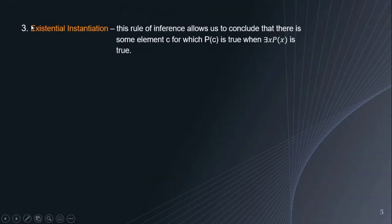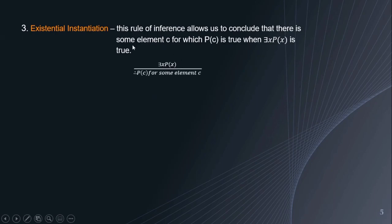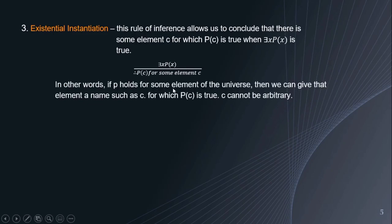Next, we have existential instantiation. When we say existential instantiation, this rule of inference allows us to conclude that there is some element c for which P(c) is true when there exists x, P(x) is true. This is how it looks like: there exists x, P(x) is true; therefore, P(c) for some element c has also to be true. In other words, if P holds for some element of the universe, then we can give that element a name c for which P(c) is true. Note that c cannot be arbitrary.